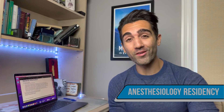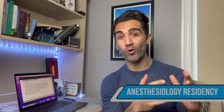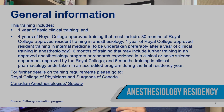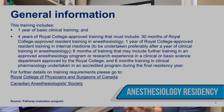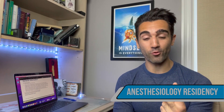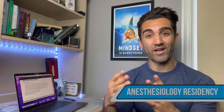Now let's talk residency, because in Canada there are two mainstream approaches for becoming an anesthesiologist. On one hand you could do the Royal College method, which is a five-year training program broken down into one year of basic clinical training and then four years of Royal College approved training — that includes 30 months of approved residency training in anesthesiology, one year of training in internal medicine, six months that may include further training in an approved anesthesiology program or research experience, and finally six months in clinical pharmacology undertaken in an accredited program during the final residency year. You could also do the Family Medicine Enhanced Skills program, where you start a two-year family medicine program and then match again through CaRMS into a one-year additional anesthesiology training program.